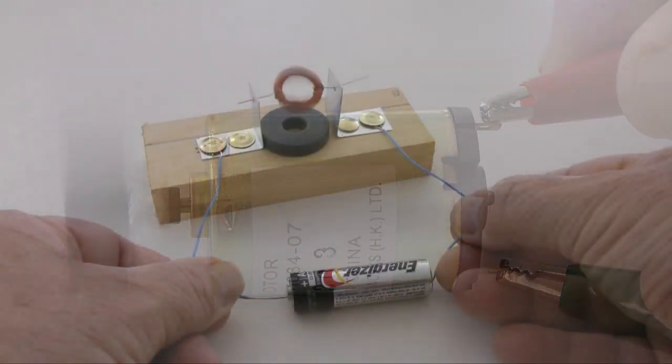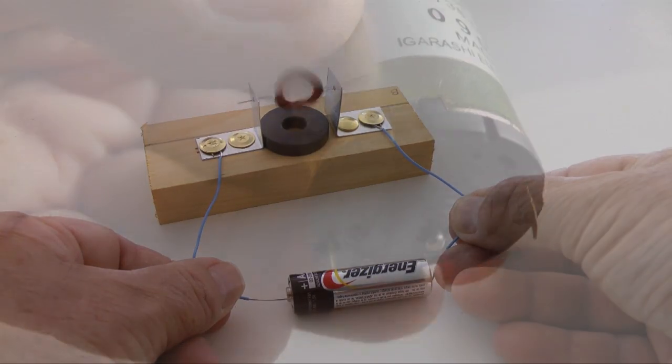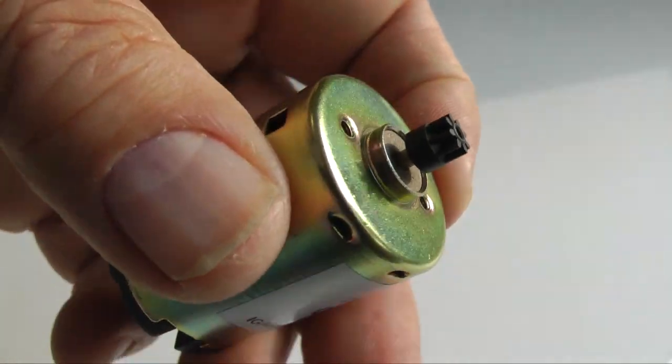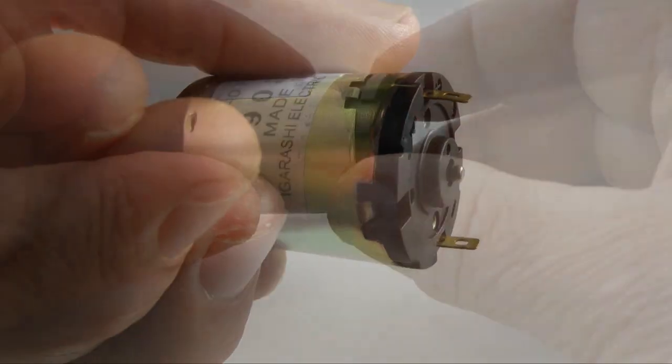If you have viewed our videos on simple electric motors, you will know that these motors exploit the interaction of magnetic fields to create motion. Battery operated or direct current motors use the fields created by permanent magnets and electromagnets.